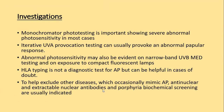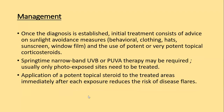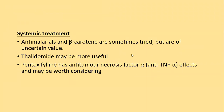HLA typing is not a diagnostic test for AP but is helpful in cases of doubt. To exclude mimicking conditions, antinuclear and ENA testing and porphyria biochemical screening are indicated. Management: once the diagnosis is established, initial treatment consists of advice on sun avoidance, behavioural advice, clothing, hats, sunscreen, window films, and use of potent or very potent topical corticosteroids. Springtime narrowband UVB or UVA therapy may be required; only photo-exposed sites need treatment. Potent topical steroids applied to treated areas immediately after such exposure reduce the risk of disease flare. Systemic treatment: antimalarials and beta-carotene are sometimes tried but of uncertain value. Thalidomide may be more useful. Pentoxifylline has anti-tumour necrosis factor alpha effects and may be worth considering.